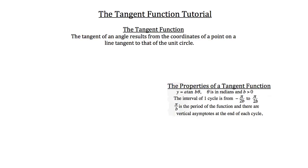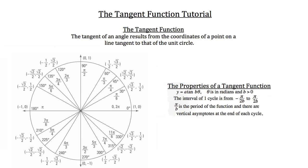First I'll show you what a tangent function looks like and then we'll discuss the properties. I'm going to bring in that unit circle that we referred to and the definition of the tangent function. The tangent of an angle results from the coordinates of a point on a line tangent to that of the unit circle.